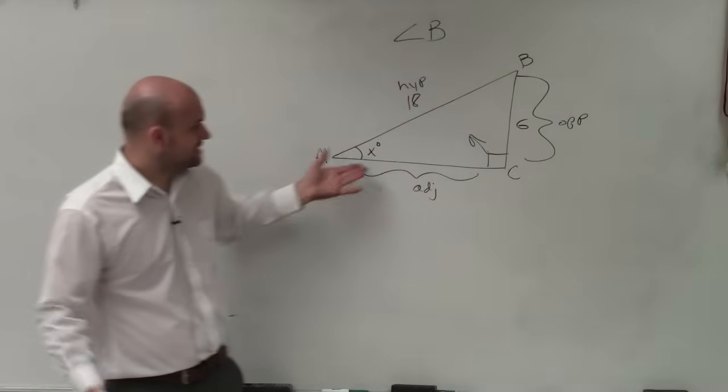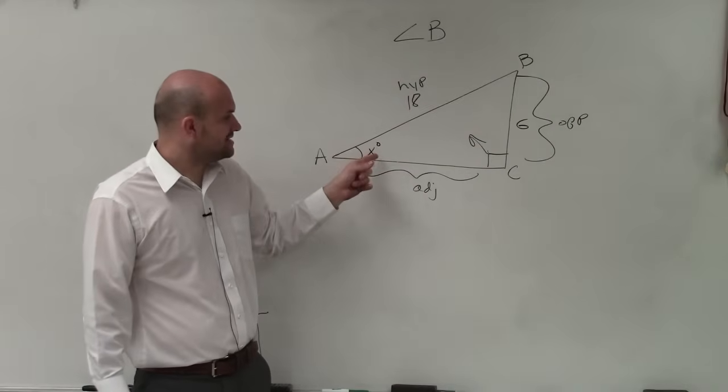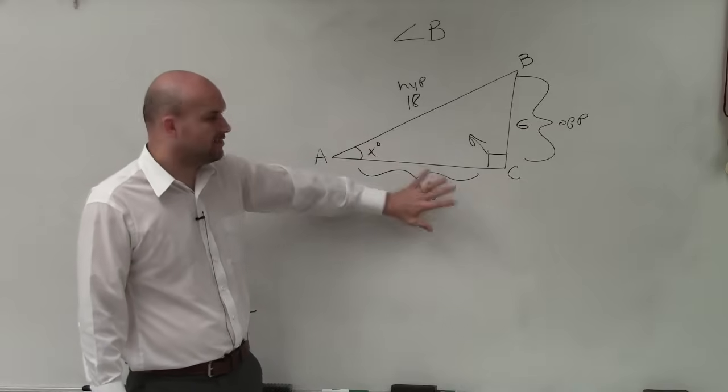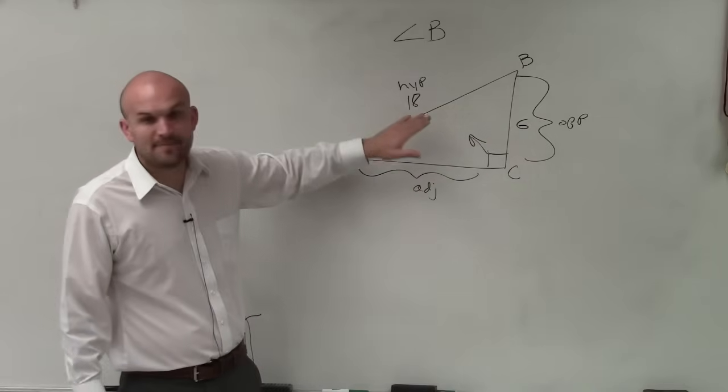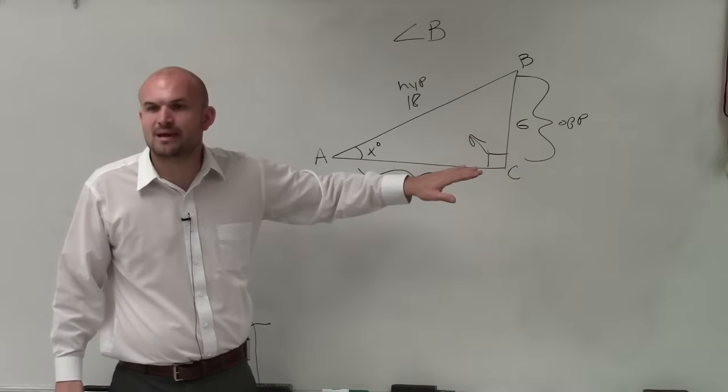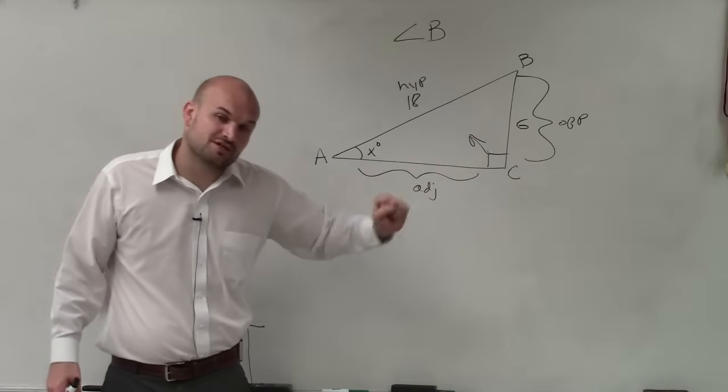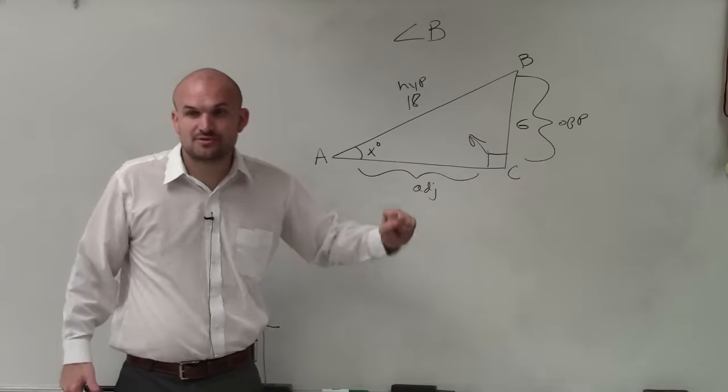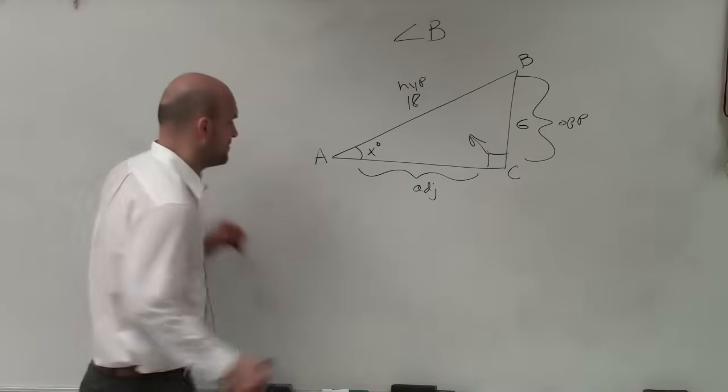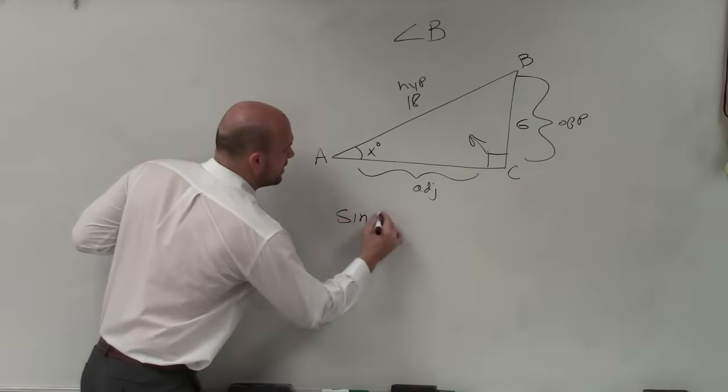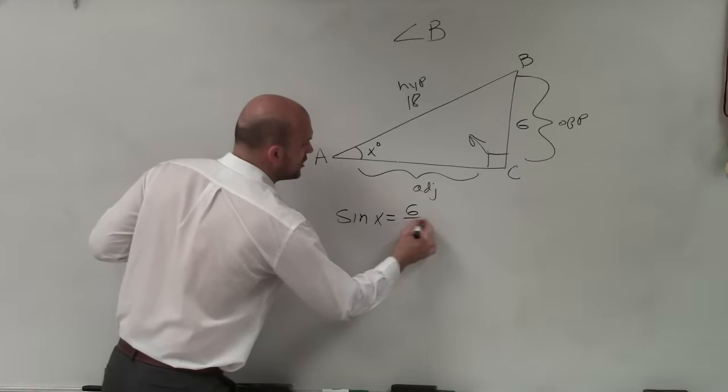Now, looking at this, you guys can now see that I don't have anything for my adjacent, but I have opposite over hypotenuse. Josh, do you remember what trigonometric function deals with opposite and hypotenuse? Sine. So I can write sine of x equals the opposite over the hypotenuse.